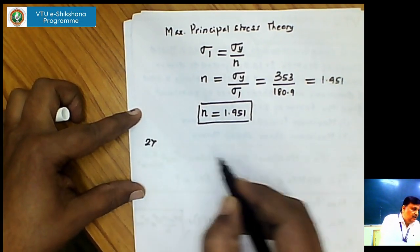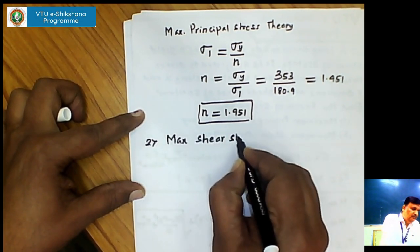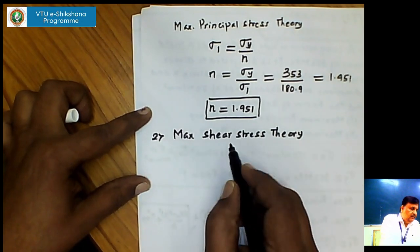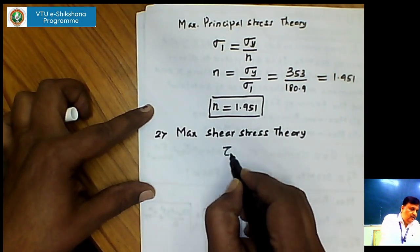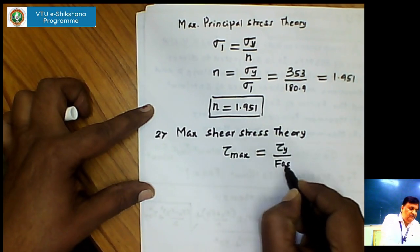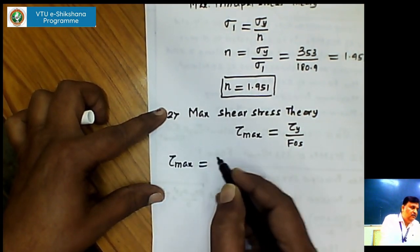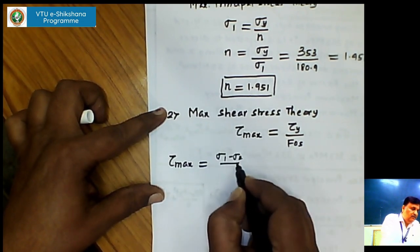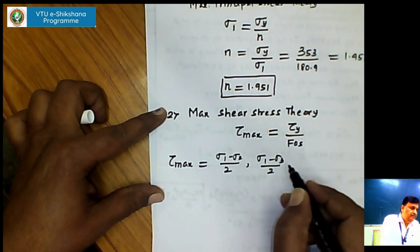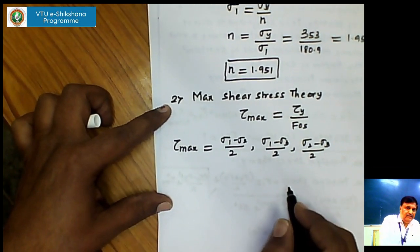Similarly, we can find the factor of safety by maximum shear stress theory. According to maximum shear stress theory, failure occurs when the maximum shear stress tau_max reaches the value of shear stress at yield point divided by the factor of safety. To apply this, we first need to find the maximum shear stress, which is equal to the largest of: (sigma 1 minus sigma 2)/2, (sigma 1 minus sigma 3)/2, or (sigma 2 minus sigma 3)/2.